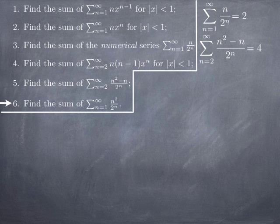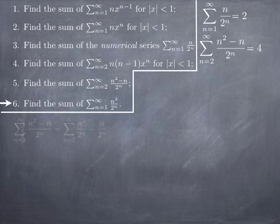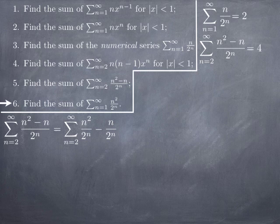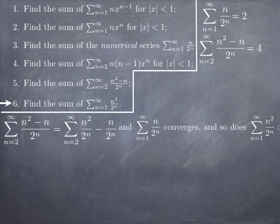We can relate this sum to the other numerical series we have evaluated: the one from question 5 whose sum was 4, and the one from question 3 whose sum was 2. Notice that n² over 2^n minus n over 2^n gives n(n-1) over 2^n, which is the general term from question 5. Splitting the fraction in the question 5 series gives a difference of two terms.